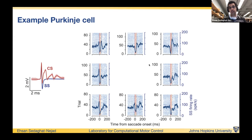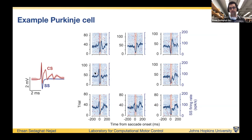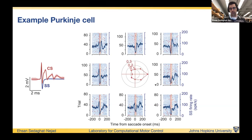Purkinje cells not only have simple spikes — they also have complex spikes. Plotting the complex spike activity of this same cell, you can see that complex spikes for rightward saccades have a higher probability of firing than for leftward saccades. As a tuning curve, this cell shows a clear complex spike preference for rightward saccades. So although simple spike activity may be complex and inconsistent, complex spikes do show clear directional tuning.